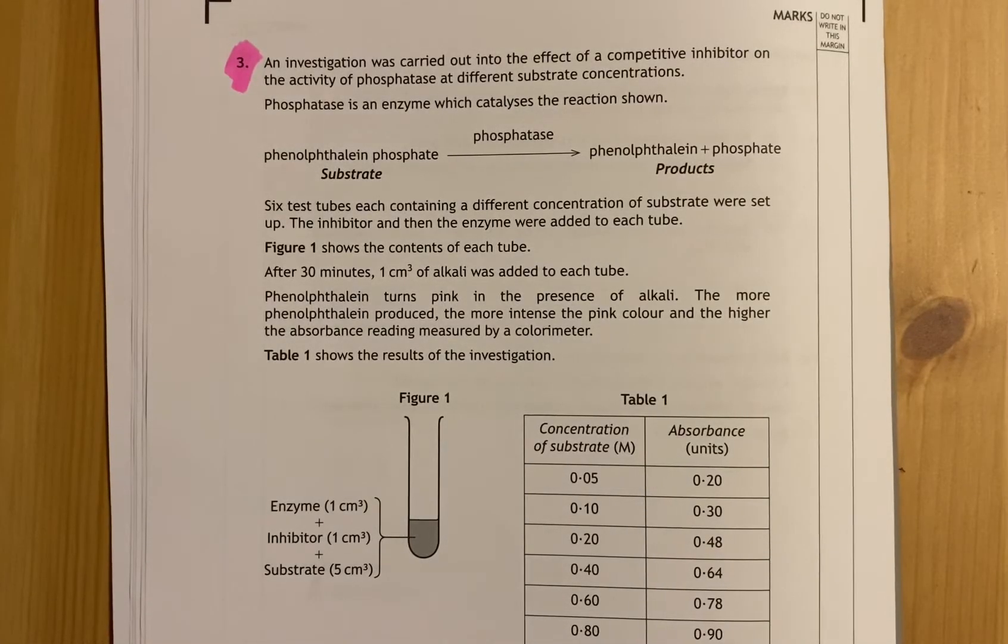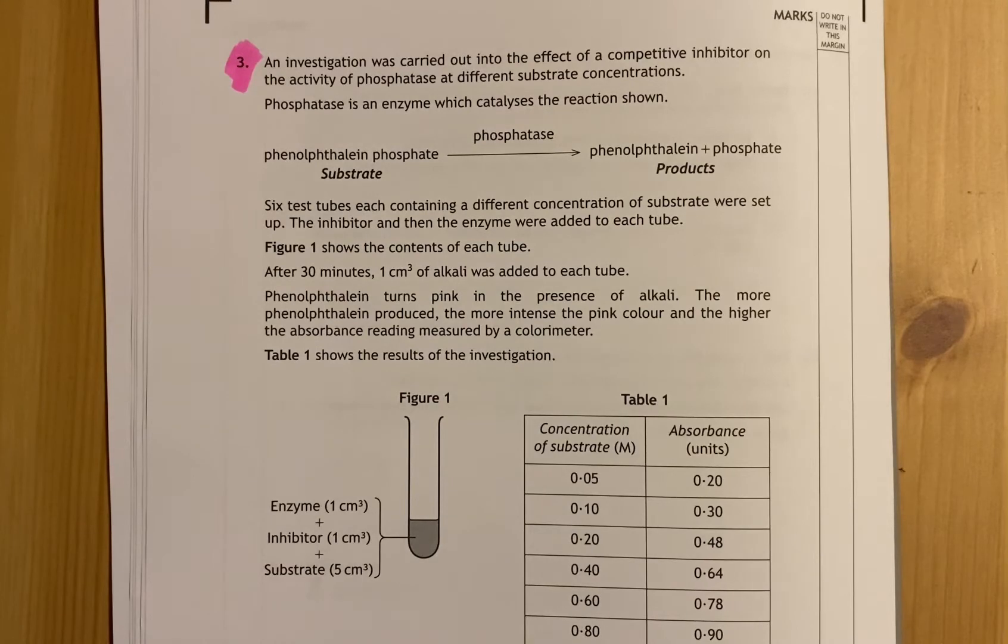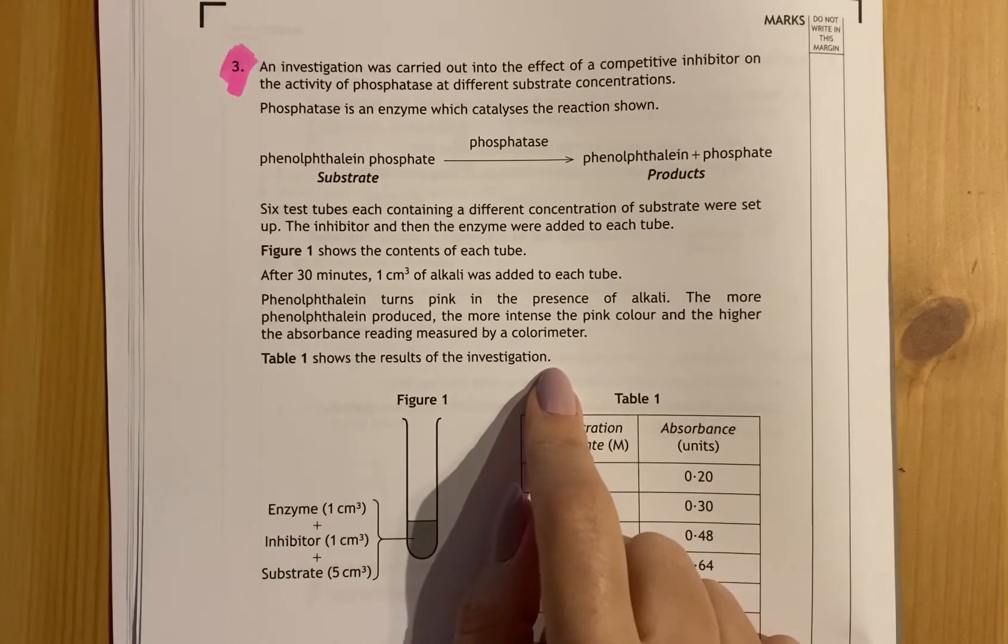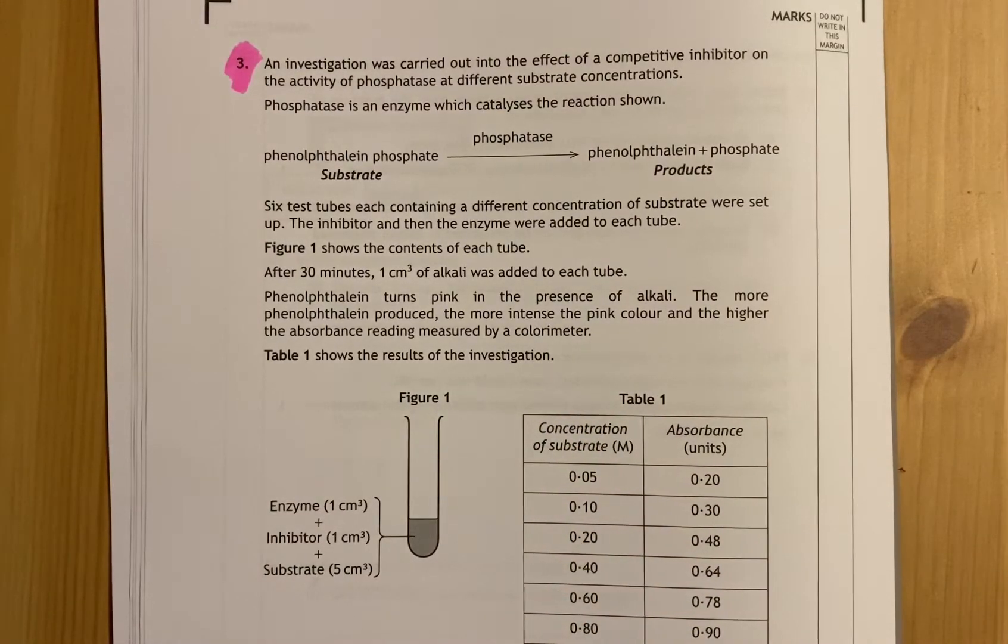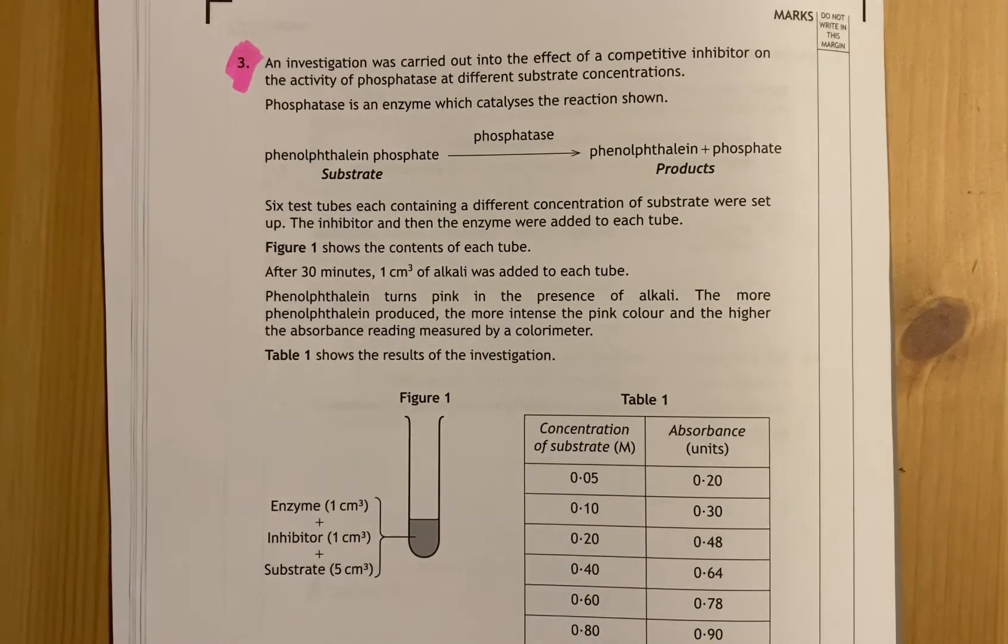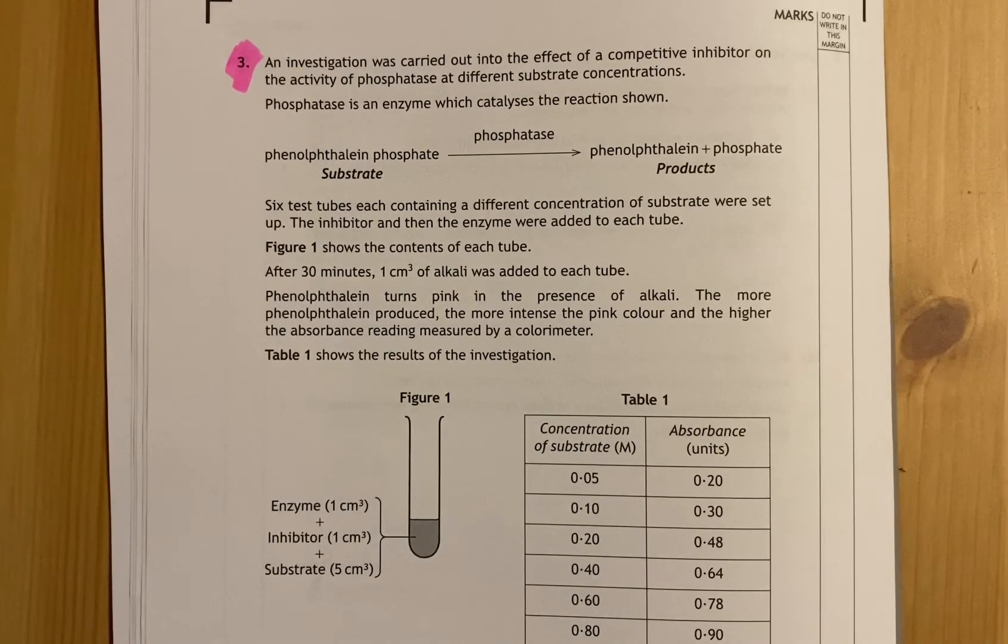This video will be one of three that I'll do on experimental design. This is from question three of the 2017 paper and it'll cover an experimental design case with an enzyme and enzyme inhibition. When you're doing an experimental design question, it's really important to read this part which seems obvious, but loads of people don't and they don't understand what's going on.